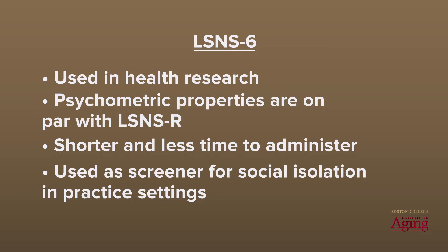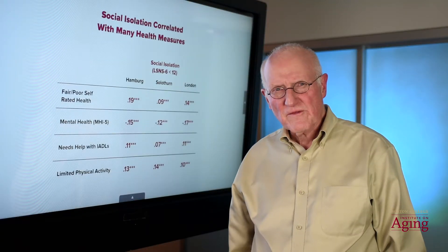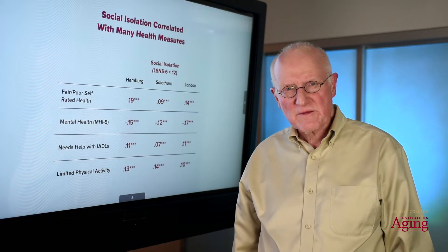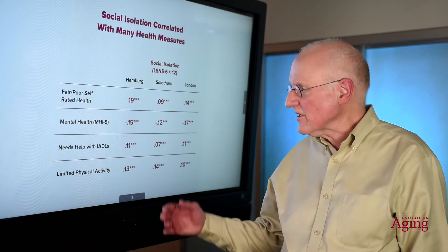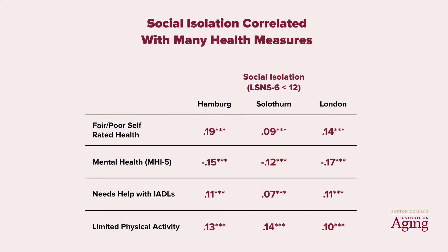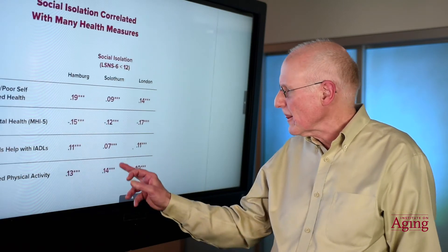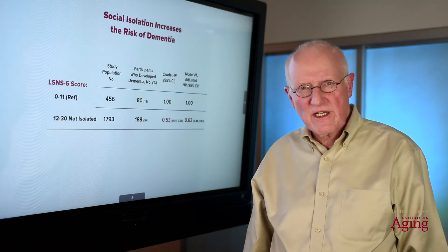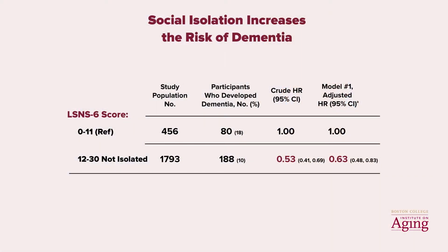The LSNS-6 is also being used as a screener for social isolation in practice settings. About 10 years ago, we did a study in Europe where we looked at three different countries — a sample in London, a sample in Hamburg, and another drawn from Solithern, a rural area in Switzerland. Social isolation as measured by the LSNS-6 was consistently associated with a wide array of health measures across all three countries. A few years later, we conducted a longitudinal study in Los Angeles using the LSNS-6 as a measure of social isolation. The focus was on identifying factors that increased the risk for cognitive impairment. We found that respondents who were deemed socially isolated at baseline were twice as likely to report symptoms of cognitive impairment by the end of the four-year period than those with strong social ties.